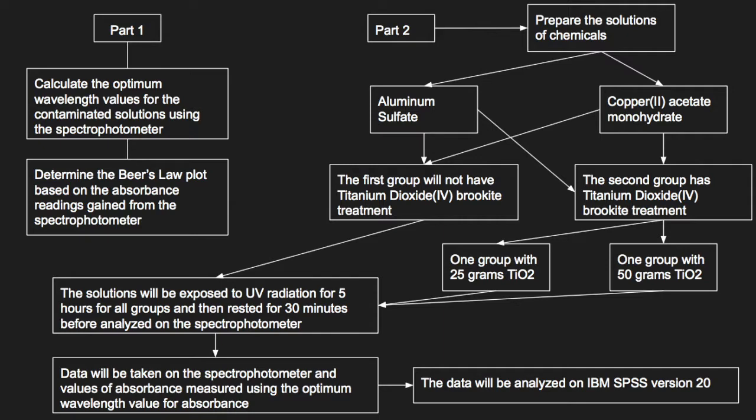In part two, two different solutions of chemicals will be prepared to simulate pollution in the environment: aluminum sulfate and copper acetate monohydrate. The first group of chemicals will not have titanium dioxide brookite treatment and the second group will. One group will have 25 grams of titanium dioxide and one group will have 50 grams.